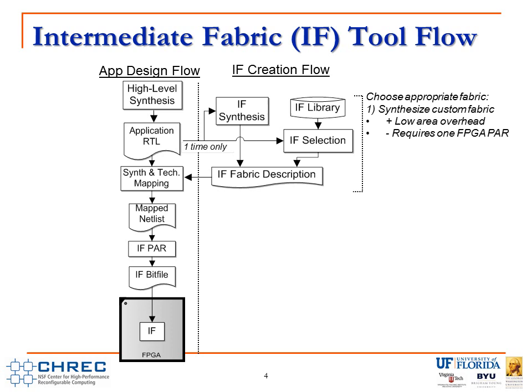There are numerous ways the tool flow can select an appropriate fabric. At one extreme is the synthesis model, where the tool flow analyzes the requirements of the RTL code and synthesizes a custom fabric based on those requirements. The advantage is a highly tuned fabric with likely low area overhead; the disadvantage is that you have to go through one iteration of FPGA place and route. A second option is the library model, where the tool flow searches through a library to select an appropriate fabric. The advantage is that the fabric is instantly available since it's pre-implemented on the FPGA; the disadvantage is that the library must have an appropriate fabric.